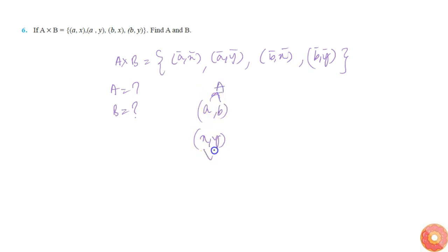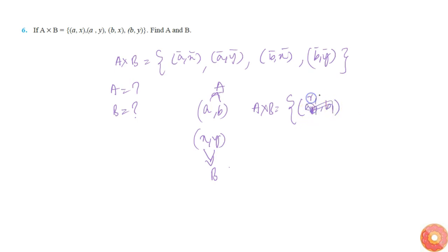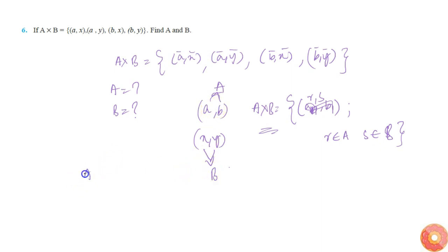These elements both belong to set A, and these elements both belong to set B. From the definition, A cross B is equal to the set of ordered pairs (r, s) such that r belongs to A and s belongs to B. This is the basic definition of the Cartesian product. So from this, all first elements belong to set A and all second elements belong to set B. Finally, A is equal to {a, b} and B is equal to {x, y}. That's all — we have found both A and B.